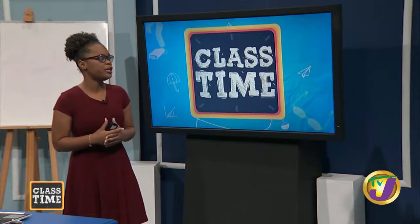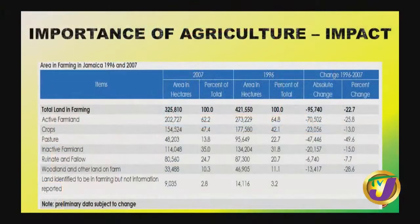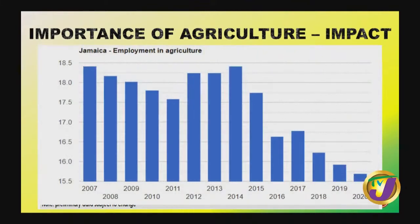There is also a breakdown of inactive farmland, woodlands, and other farming engagements — lands identified as farmlands but not reportedly being used — and there is a decline there as well. Employment statistics related to Jamaica and farming show a decline from 2007 to 2020, with just over 15.5% of persons actively engaged in farming. There was some increase between 2012 and 2014, but then a consistent decline through 2020.